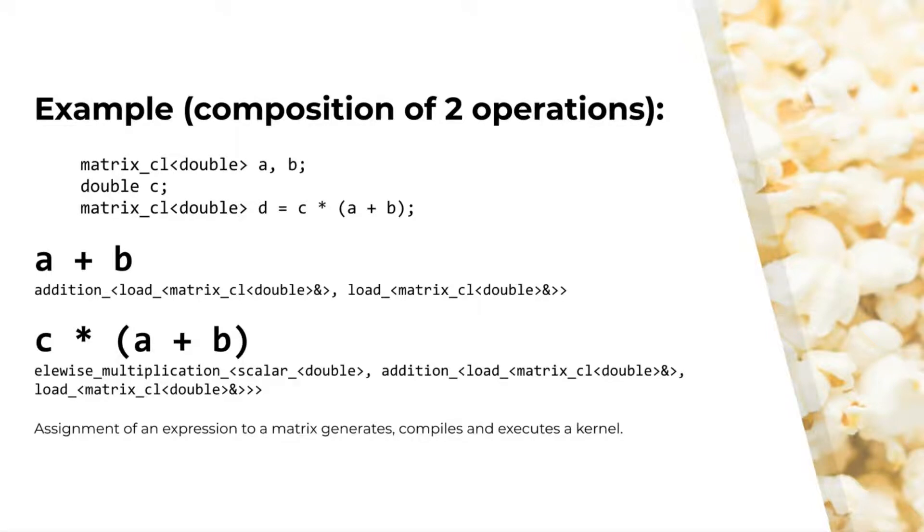We overload operators and other functions so that when given matrix-cl objects, we do not calculate the result after each operation. Instead, they return an object that represents both the operation and references of arguments to the operation. We combine multiple operation objects into arbitrarily complex expressions.